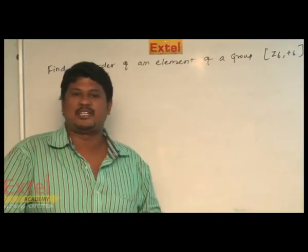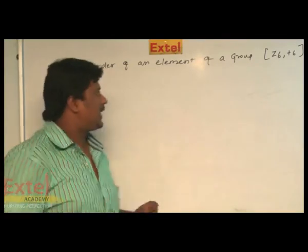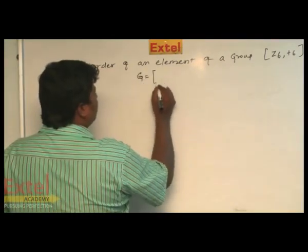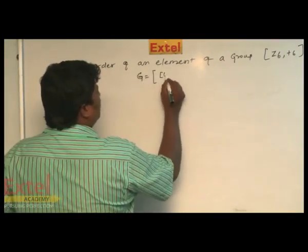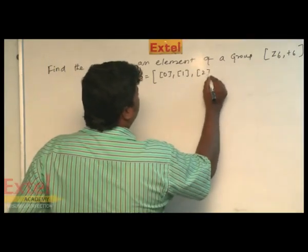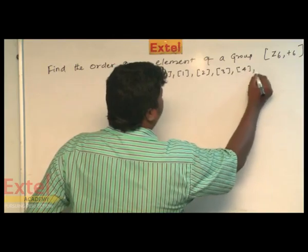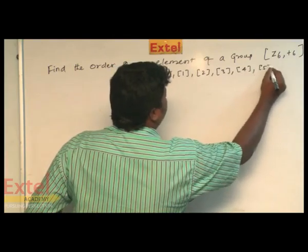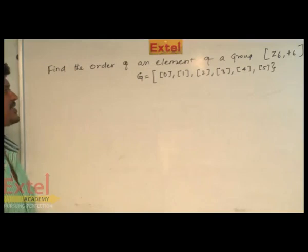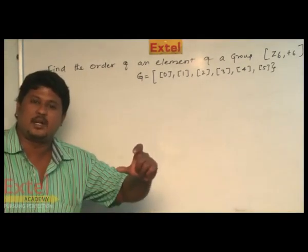Z6 with +6 is the addition modulo 6. Therefore, I can construct the group G, which is equal to {0, 1, 2, 3, 4, 5}. This is the group G, and we have 6 elements in G.